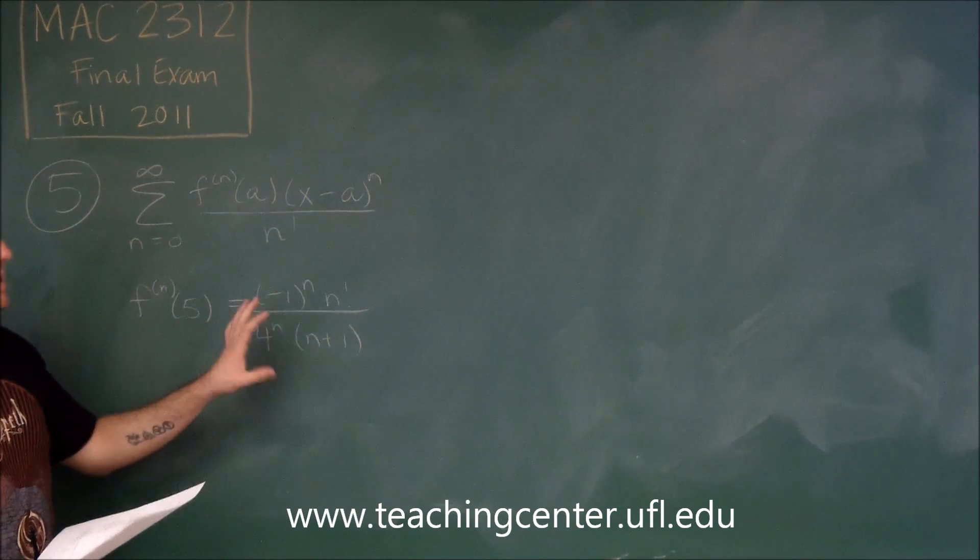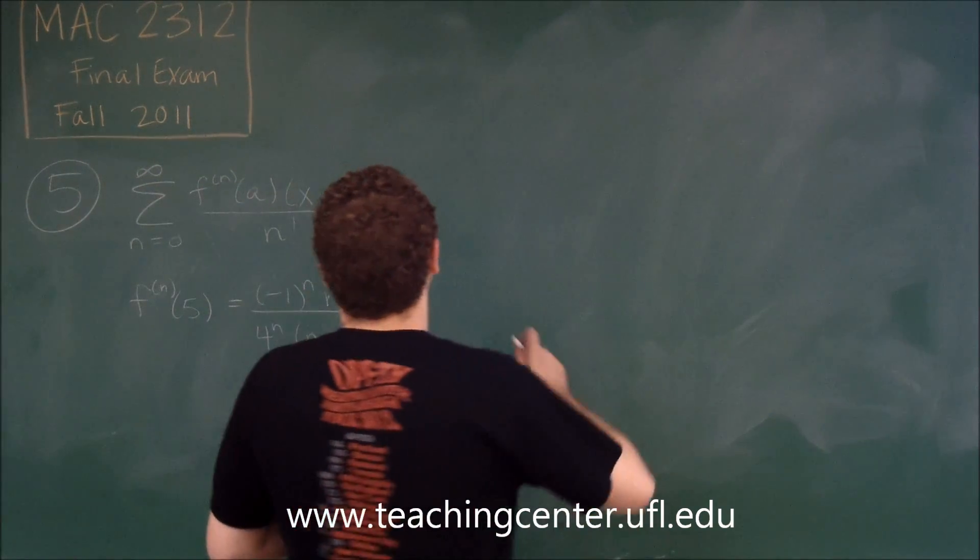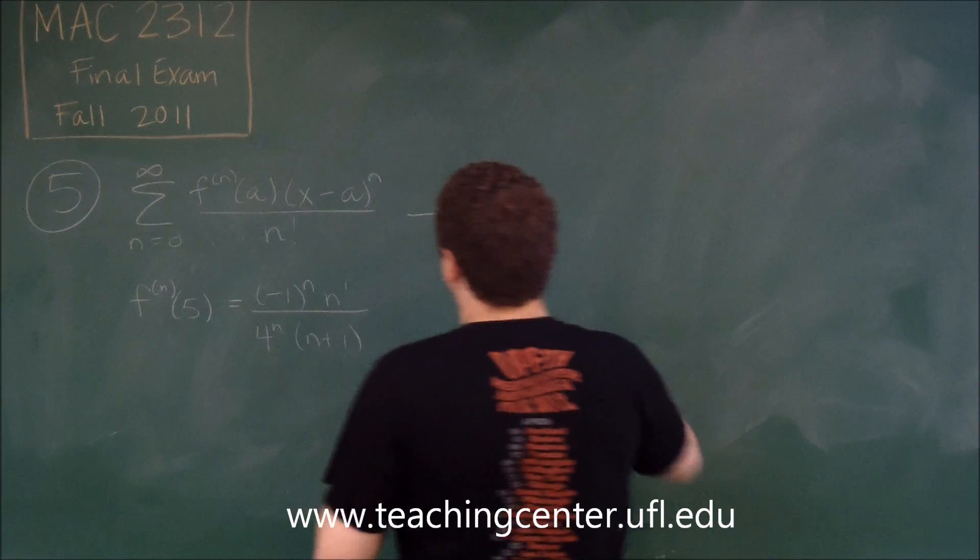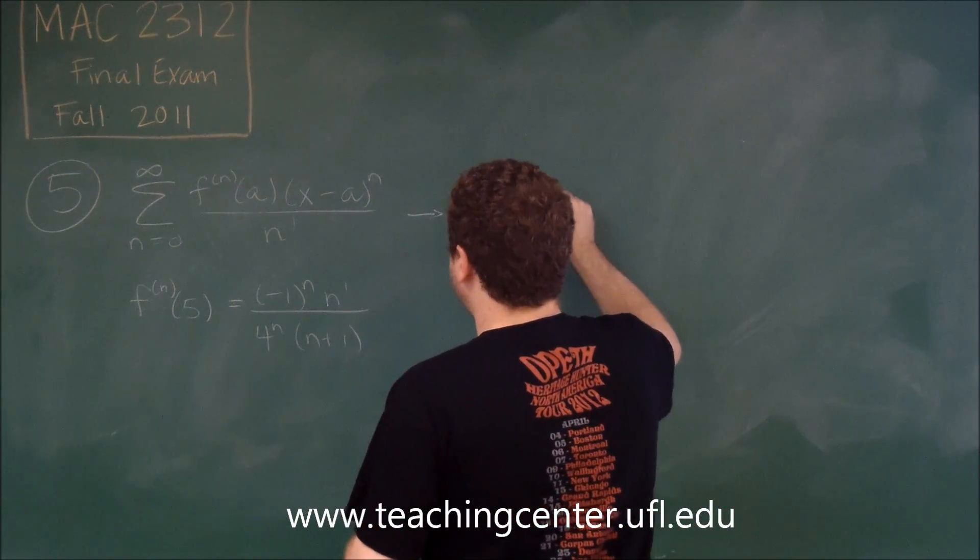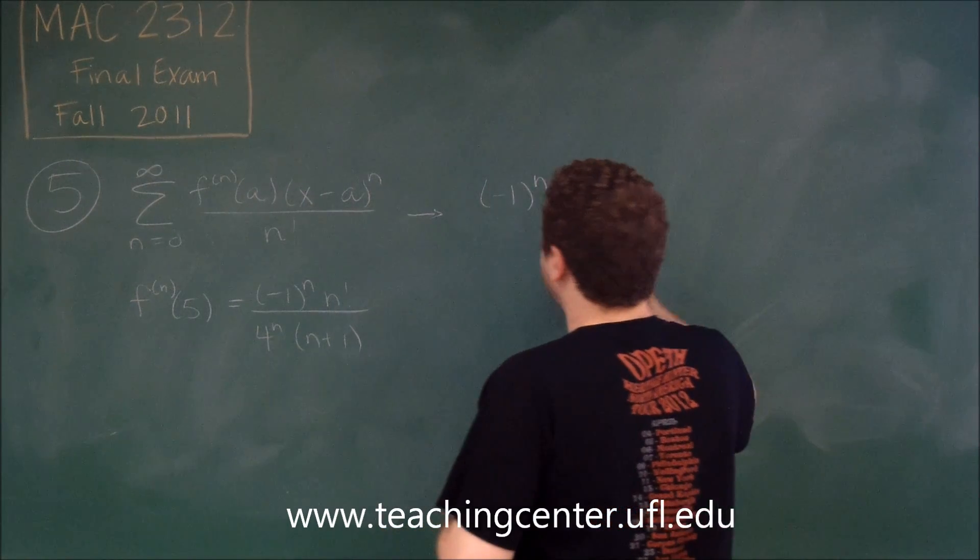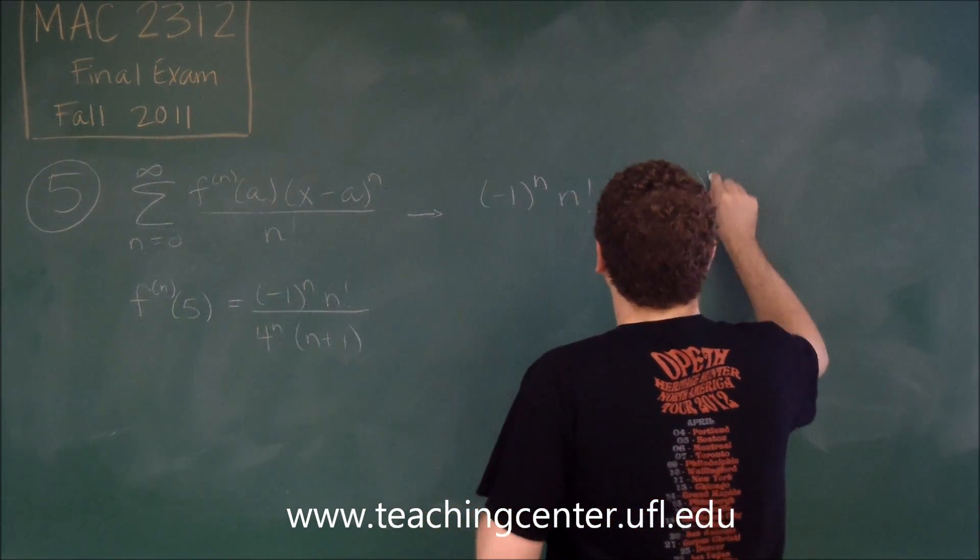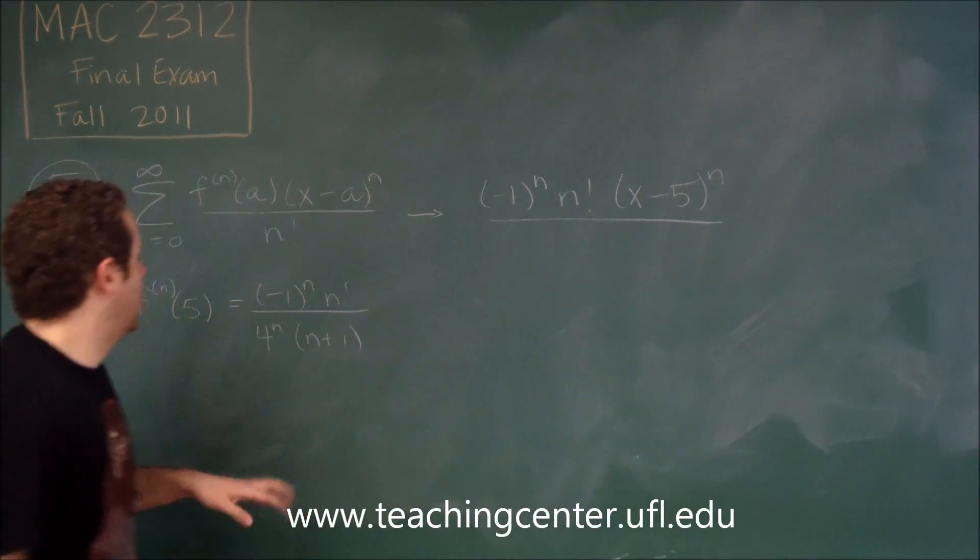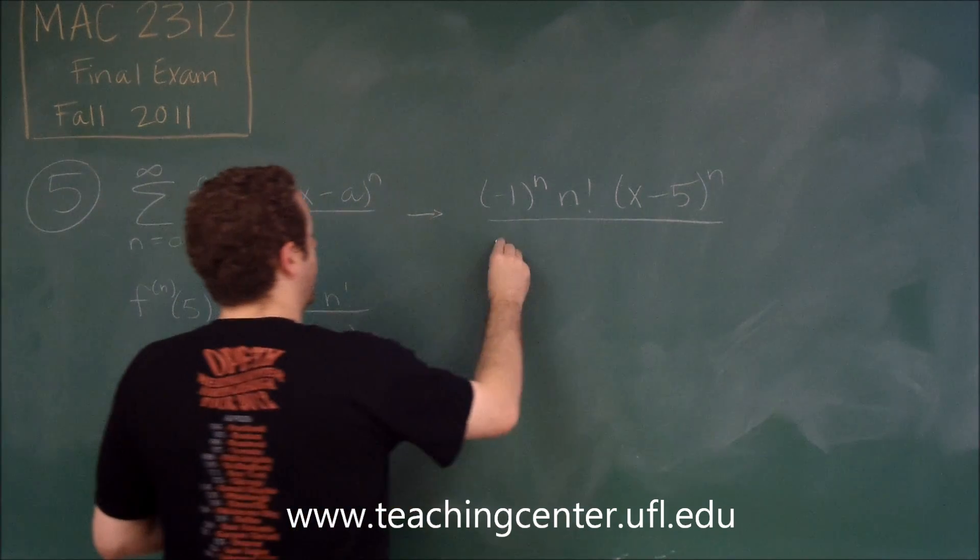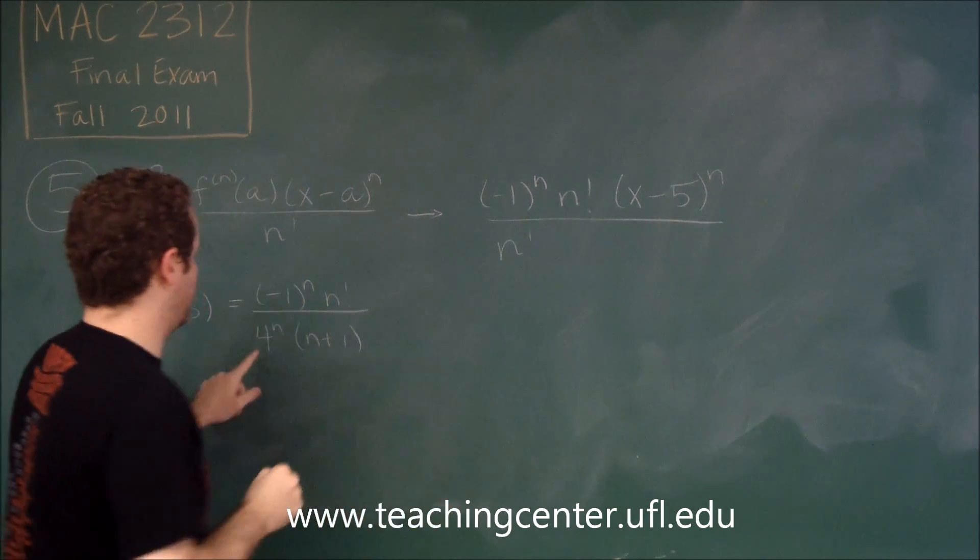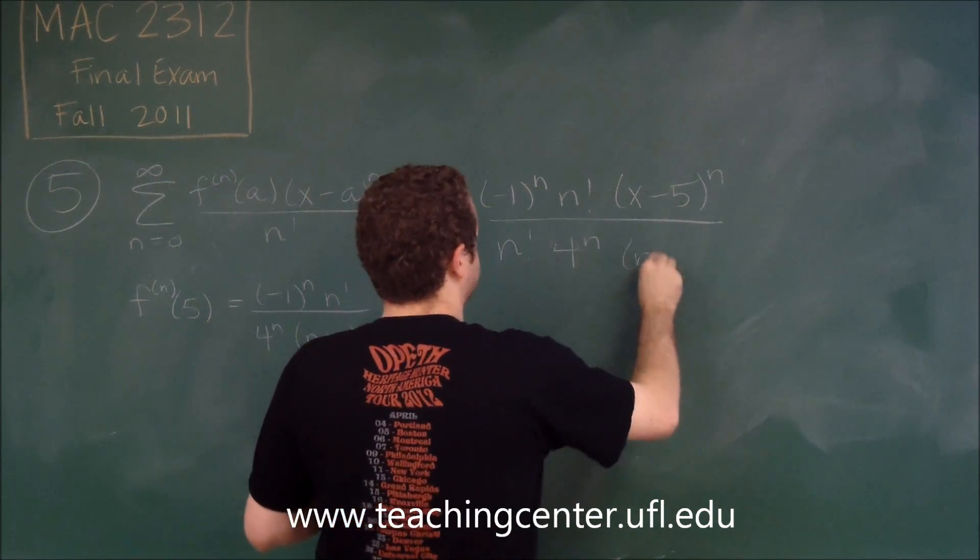So this whole term is going to be substituted in for this one, but we still need to write out the rest. So this becomes negative 1 to the n, n factorial. We still have this on top and we know that's now x minus 5 to the n. These two terms would then go to the bottom. So we have n factorial that was there to start with, 4 to the n, and n plus 1.